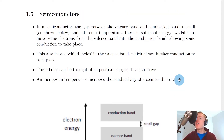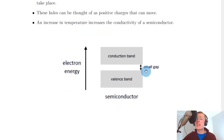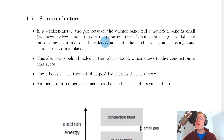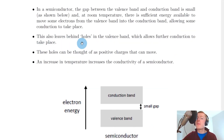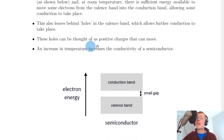Lastly we'll look at how a semiconductor works in terms of band theory. In a semiconductor the gap between the valence band and conduction band is small, and at room temperature there's sufficient energy available to move some electrons from the valence band into the conduction band allowing some conduction to take place. This also leaves behind things we call holes in the valence band which allows further conduction to take place. Holes can be thought of as positive charges that can move — they are simply the absence of an electron.